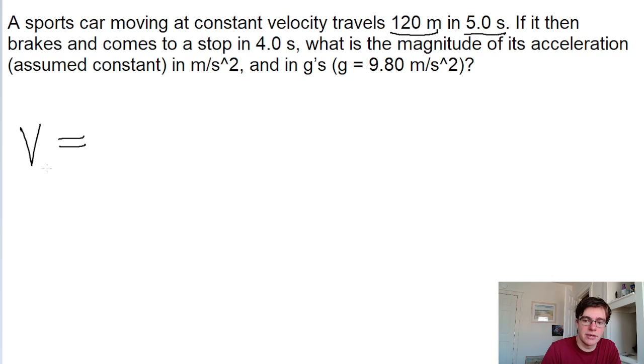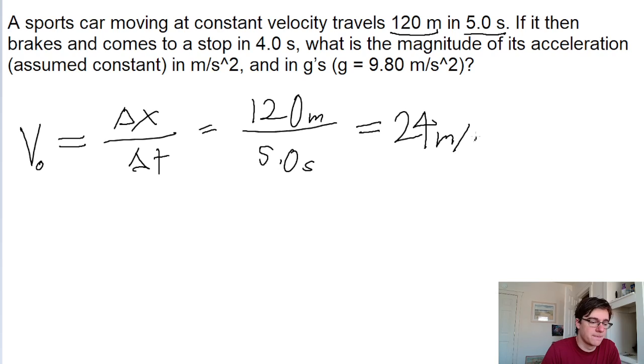So to find the initial velocity, we can just take the distance it traveled and divide that by the time interval, which in this case is 120 meters divided by five seconds, which is 24 meters per second. So the initial velocity is 24 meters per second.